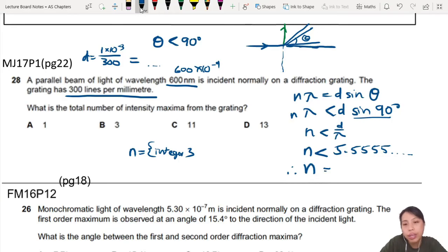integer smaller than this value will be 5. Cannot be 6—6 is larger than 5.555. You want something less than that, so 5. What that means is if you draw a picture of the grating, you can go 1, 2, 3, 4, 5—that's a lot of order maxima.